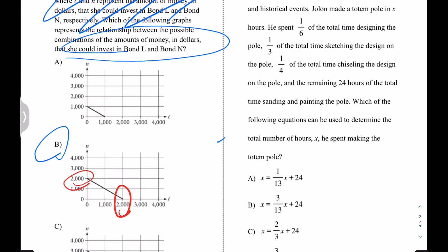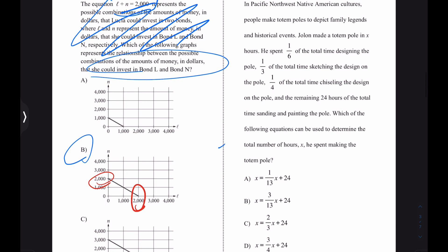Let's keep flying. Come over here for number five on the right-hand side. Not reading really much of this. I'll just go straight to the question, which of the following equations can be used to determine the number of hours he spent making the totem pole? Well, unfortunately, we do have to read a little bit. It says Jalon made a totem pole in X hours. He spent one-sixth of the total time designing, one-third sketching, and one-fourth chiseling.